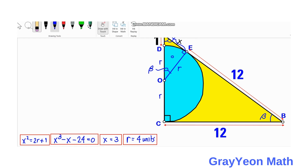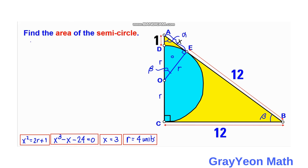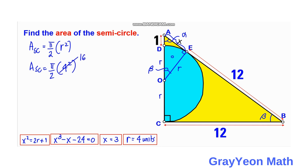Now for the final step, since we have the radius of the semicircle, we can find the area. The area of a semicircle is (π/2)r². Substituting R = 4: area = (π/2)(4²) = (π/2)(16) = 8π. Therefore the area of the semicircle is 8π square units.